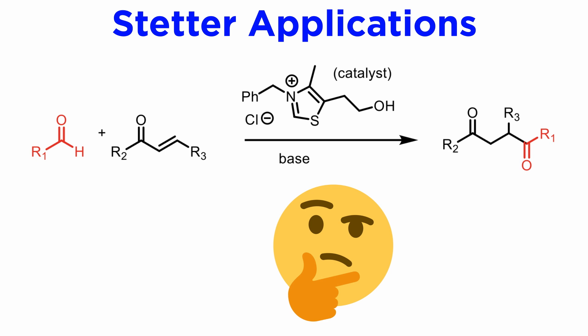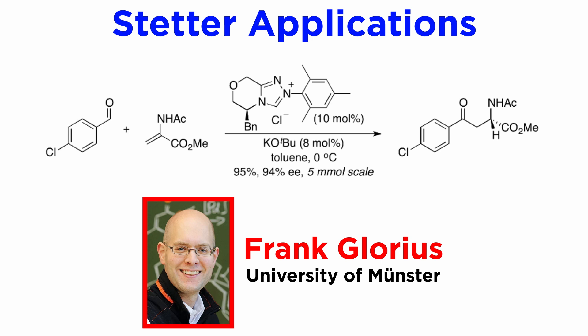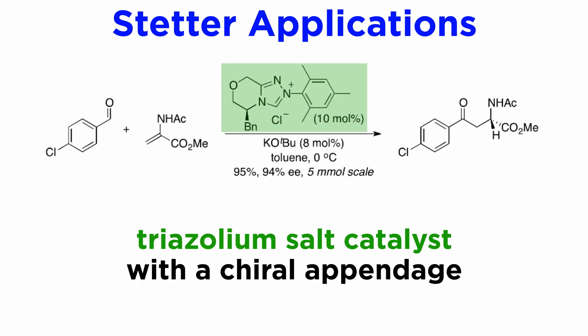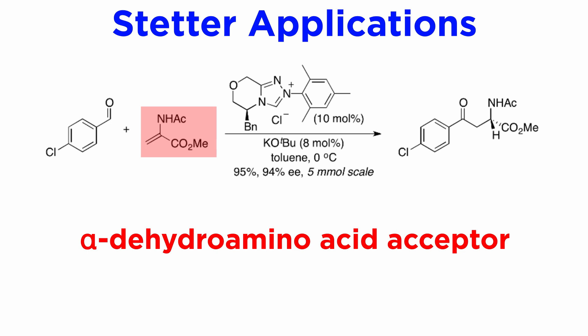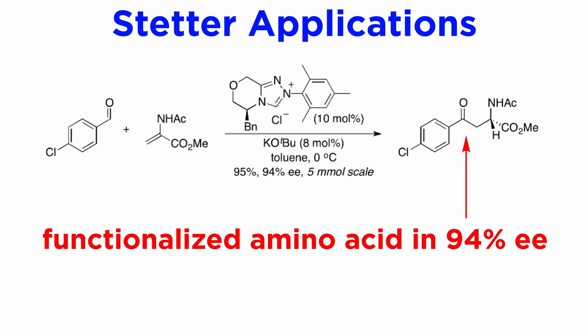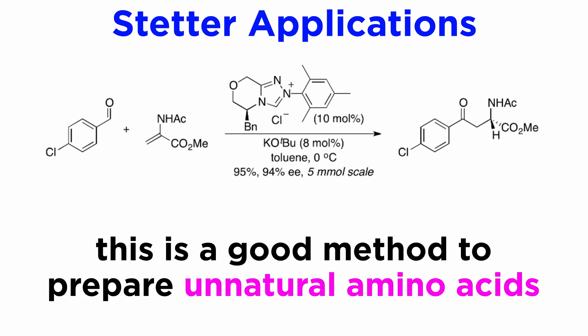We will illustrate these developments with one of the enantioselective applications of the reaction, through the work of Frank Glorius, professor of organic chemistry at the University of Münster. Here, the catalyst was changed to a triazolium salt, and a chiral appendage was fused to the ring to induce enantioselectivity. The acceptor is an alpha-dehydroamino acid, and the new functionalized amino acid is formed in 94% enantiomeric excess, which means 97% purity for the S-form. This is therefore also a good method to prepare unnatural amino acids — meaning non-canonical amino acids which do not exist in nature.